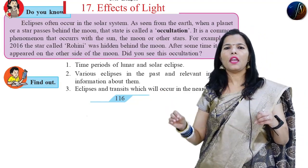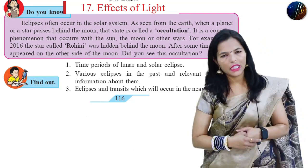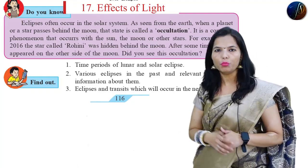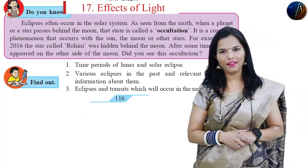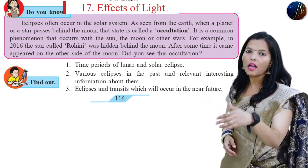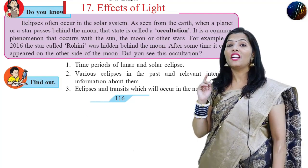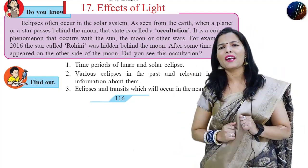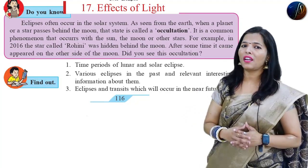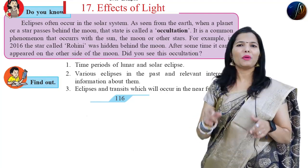It occurs among the Sun, Moon, and other planets. For example, in the year 2016, the star called Rohini was hidden behind the Moon. This occultation of the star Rohini behind the Moon was observed. If you have any interesting facts about occultation, you can put them in the comment box.